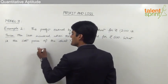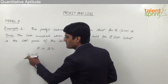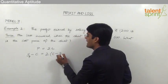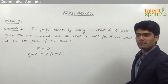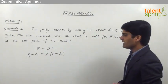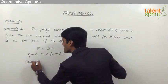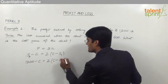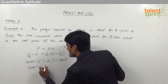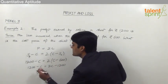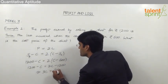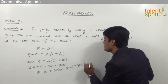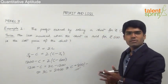Going by the same concept, profit is equal to twice the loss. Profit is SP minus CP (selling price for profit), and this should equal twice the loss, which is CP minus SP (selling price for loss, SL). Substituting the values: 1200 minus C equals 2 into (C minus 600), which gives 1200 minus C equals 2C minus 1200. So 3C equals 2400, and therefore the cost price of the shirt is 2400 divided by 3, which equals Rs.800.